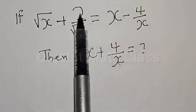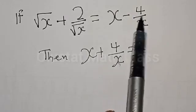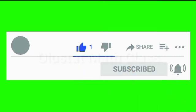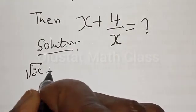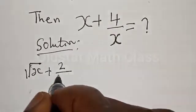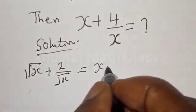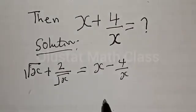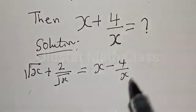Square root of s plus 2 divided by square root of s equals x minus 4 divided by x. But before we proceed, please don't forget to like, share, comment, and subscribe. Thank you. Solution. We have square root of s plus 2 divided by square root of s equal to x minus 4 over x. So we want to look at how we can factorize this in order to get the value of s plus 4 divided by x.